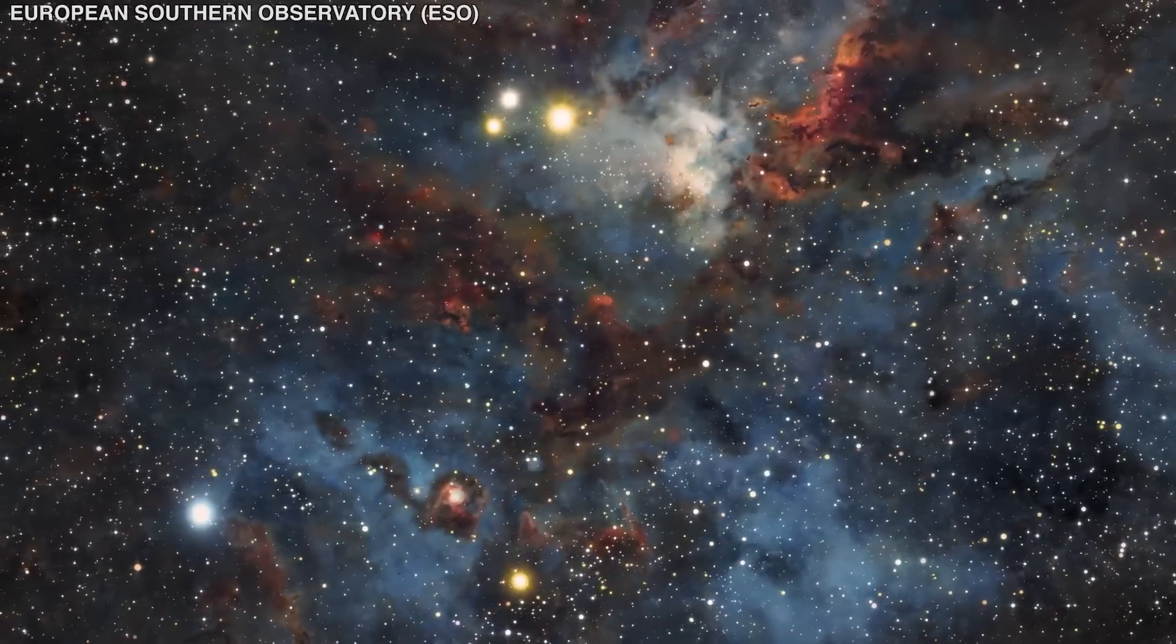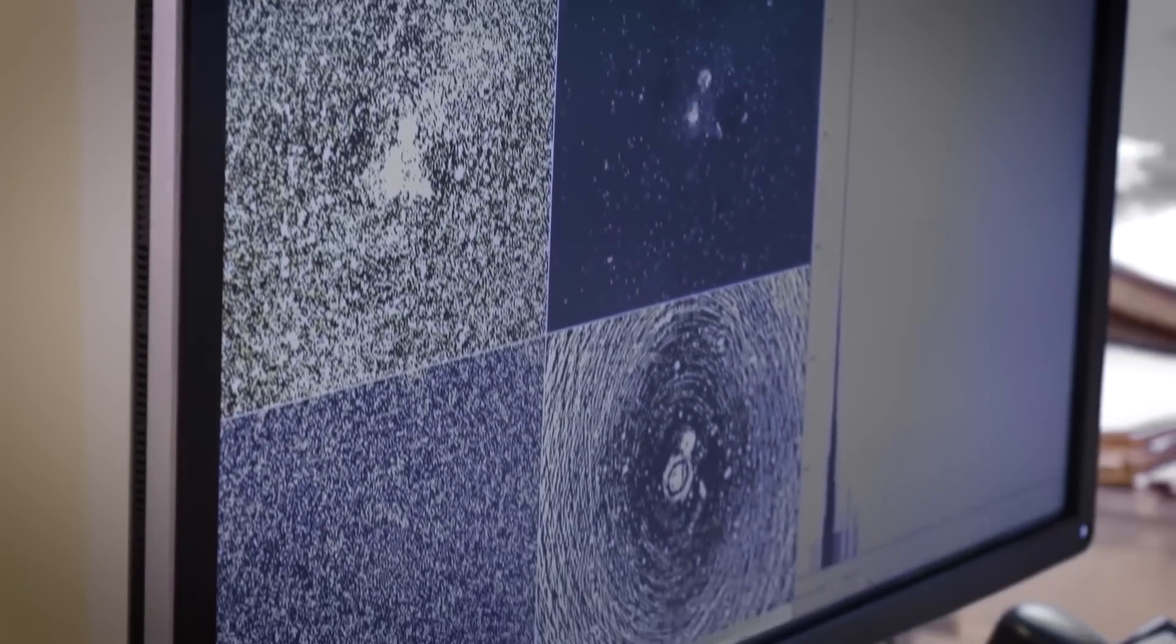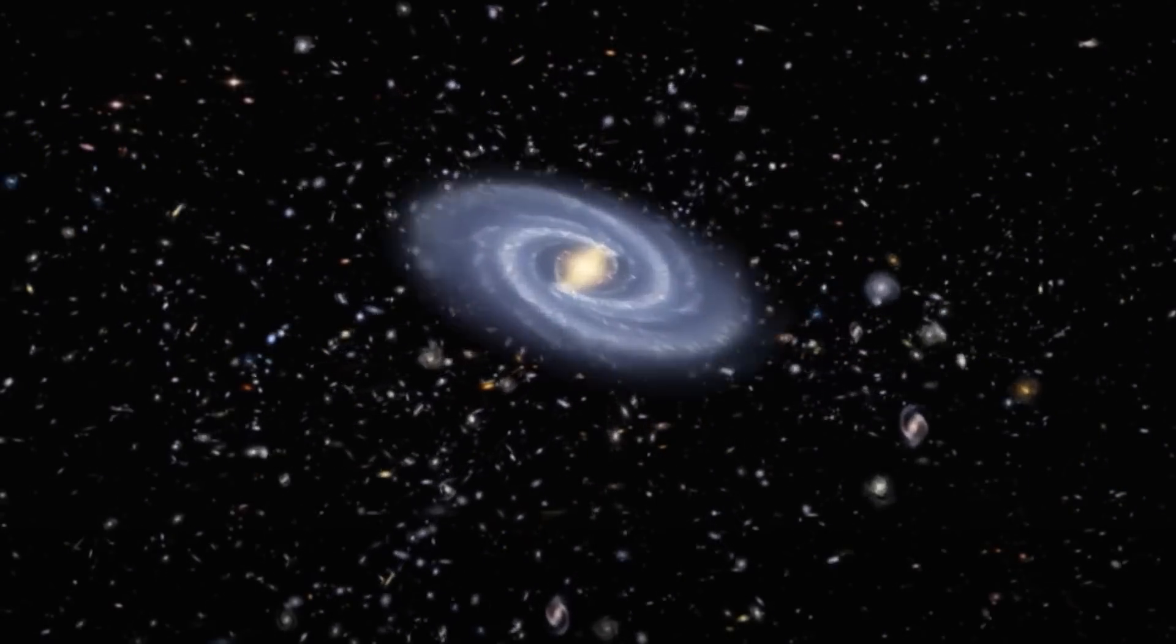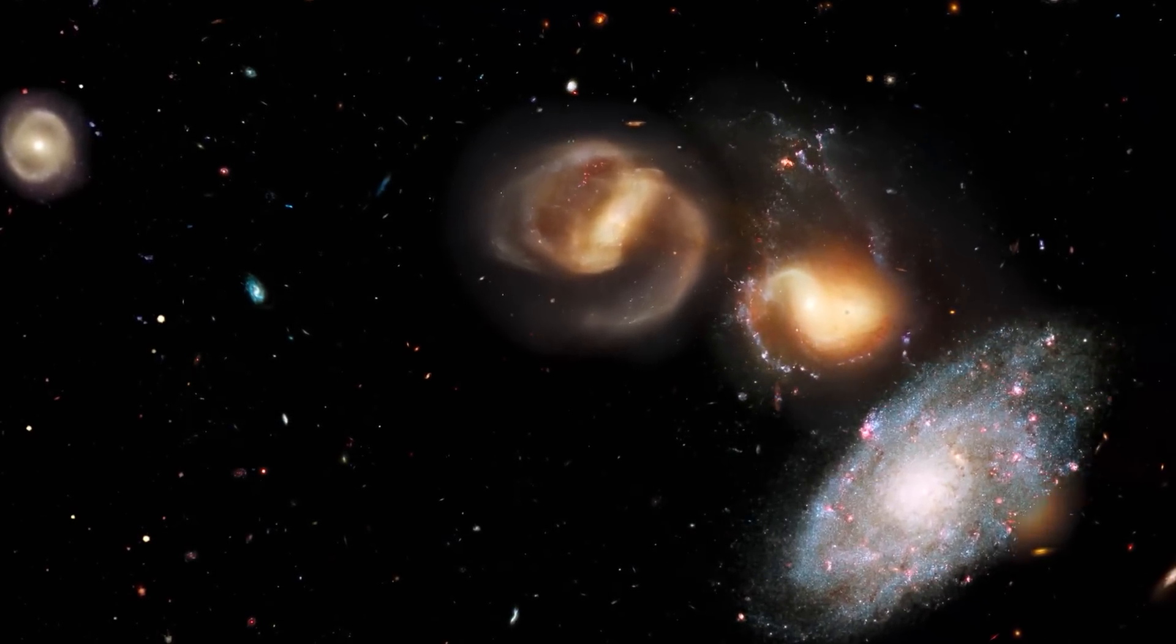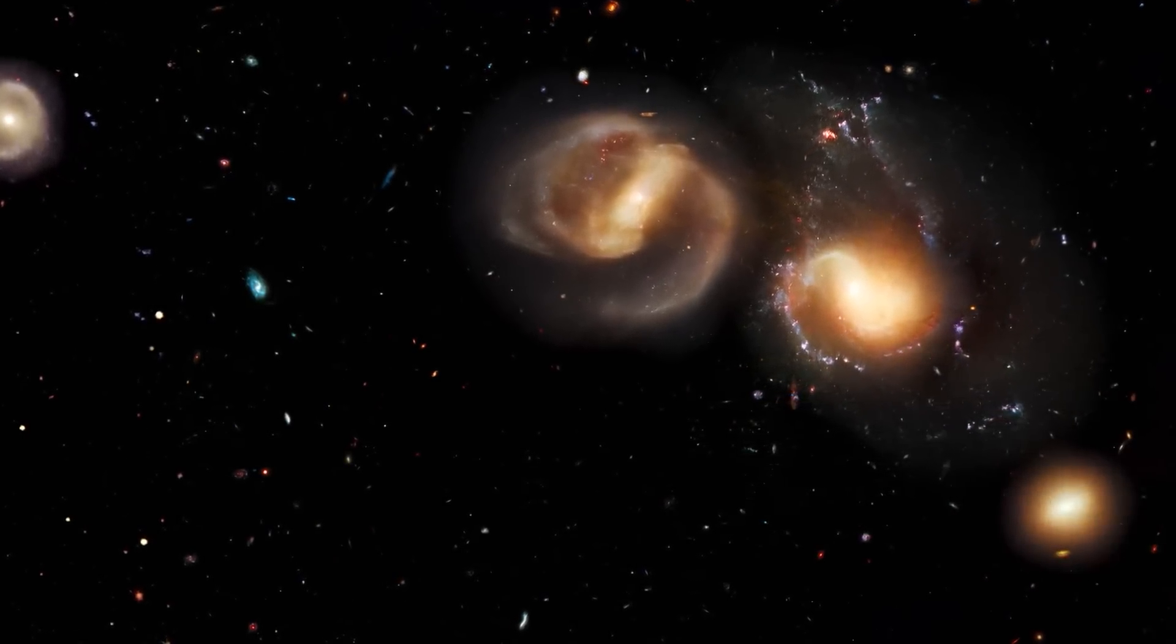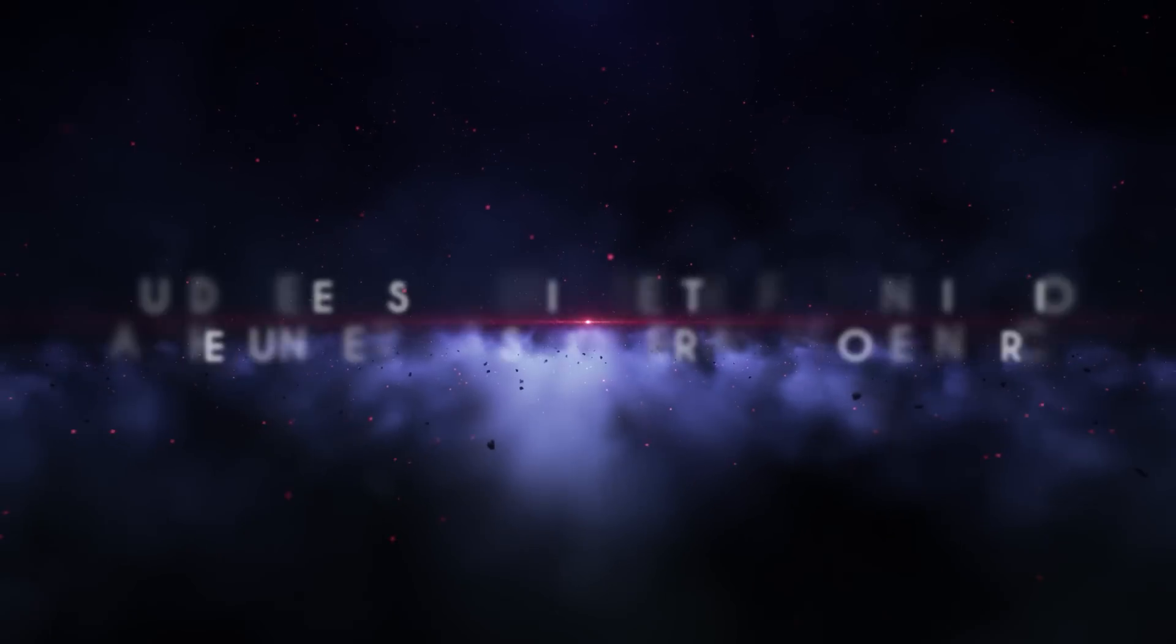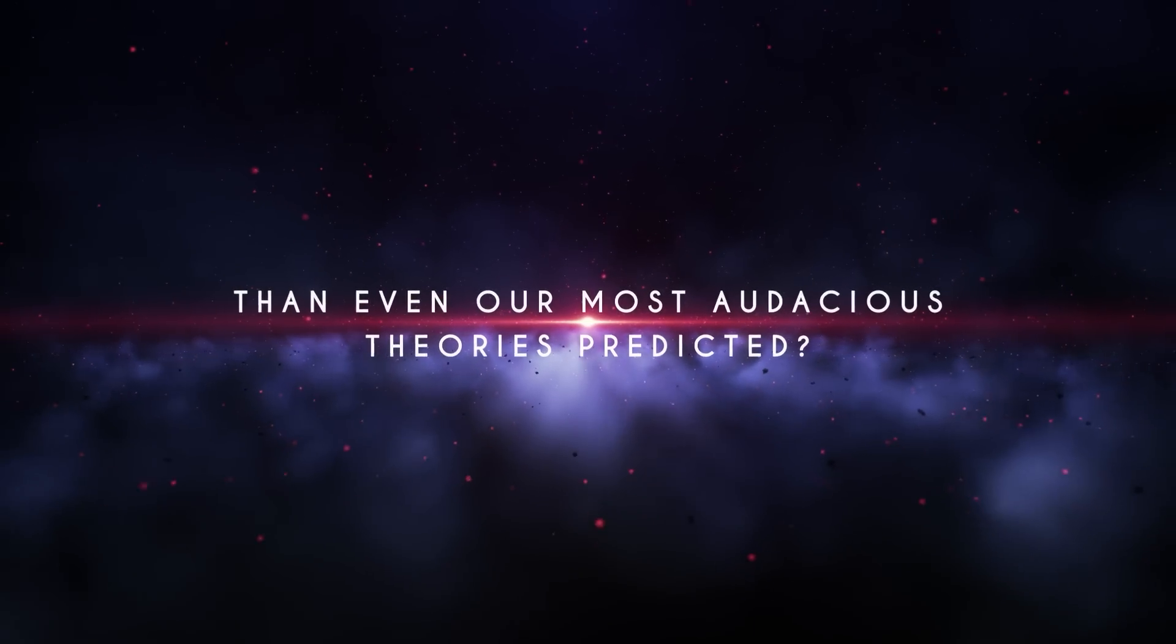Soon after the JWST discovered these galaxies, theorists and observers began to investigate them in order to explain the phenomenon. They began to wonder if the slew of unusually large and luminous early galaxies was a mirage or if it was due to defects in the telescope's initial observations. But if these findings were true, could they be explained by current cosmological models? Could these discoveries be the first indication that the universe is stranger and more intricate than even our most audacious theories predicted?